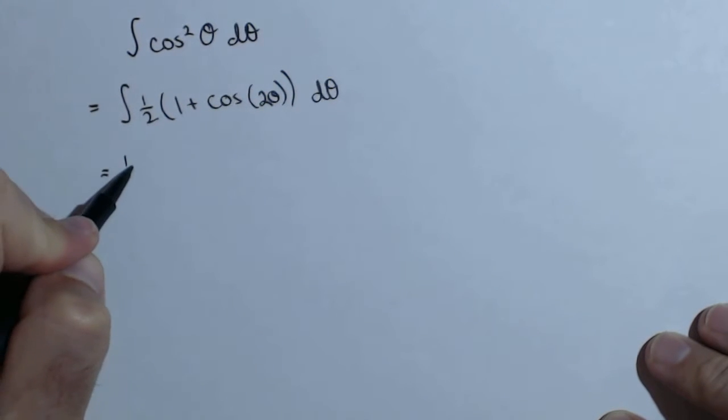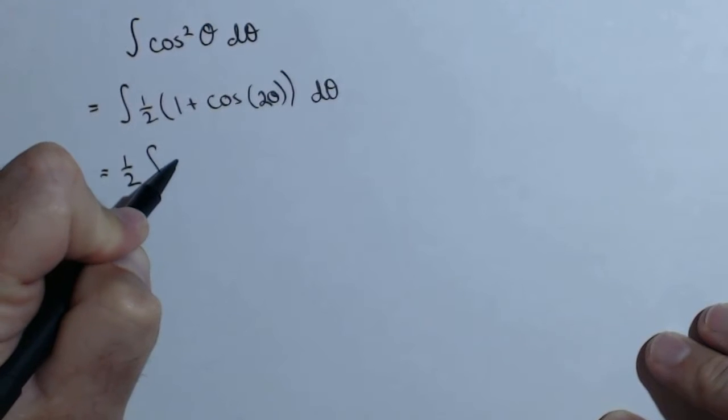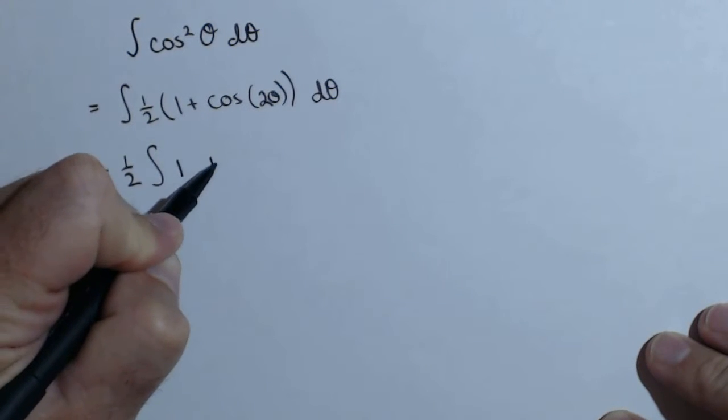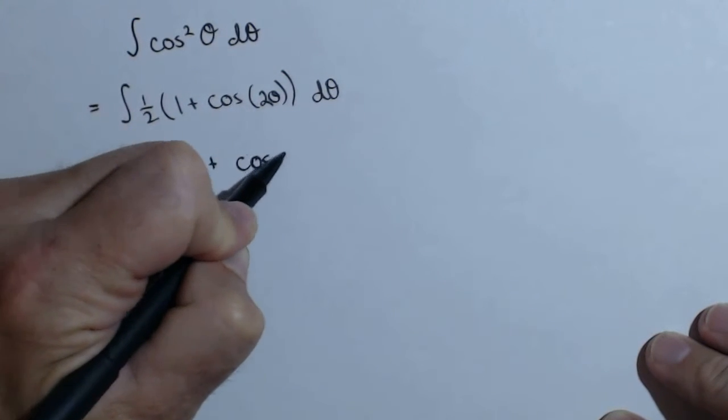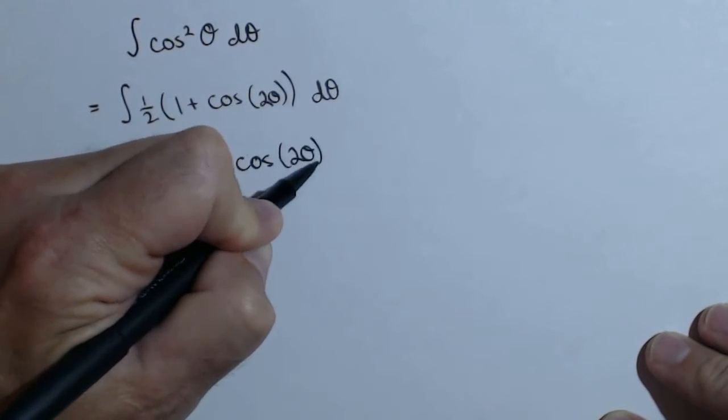Now we can pull the one half out and we get the antiderivative of one plus cosine of two theta, d theta.